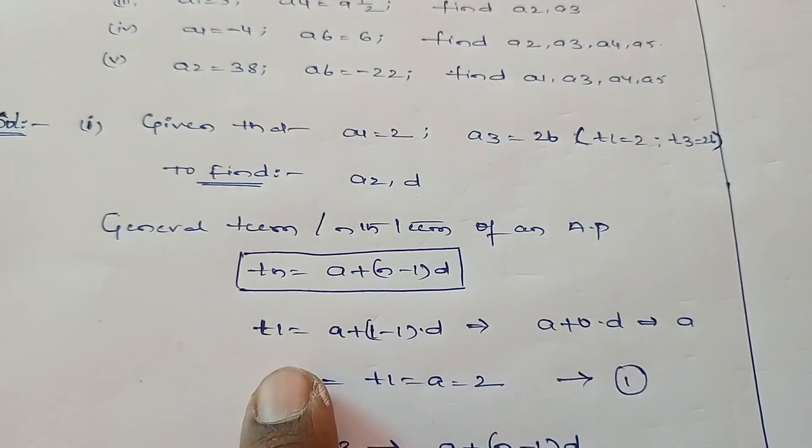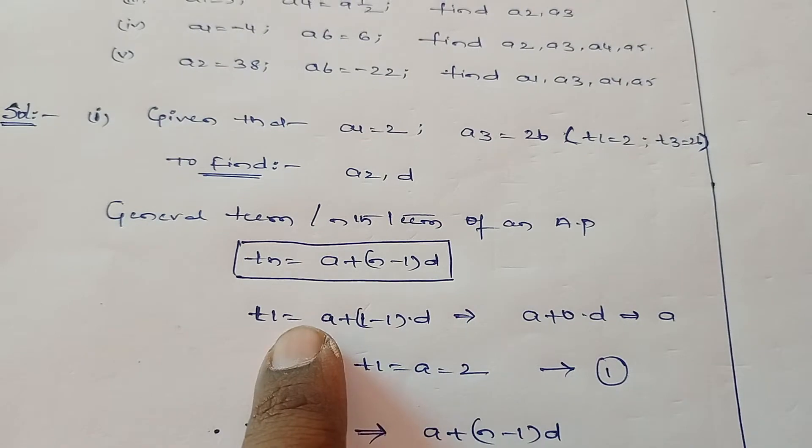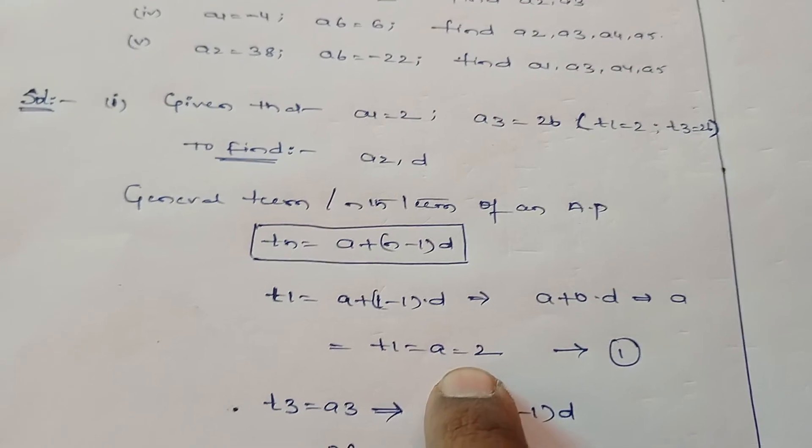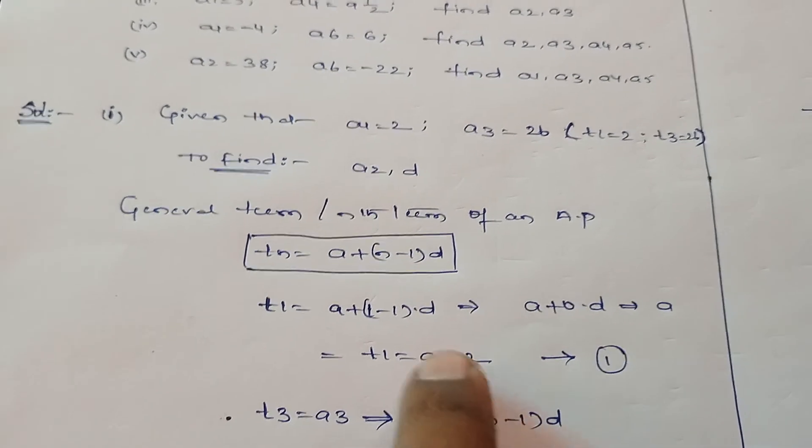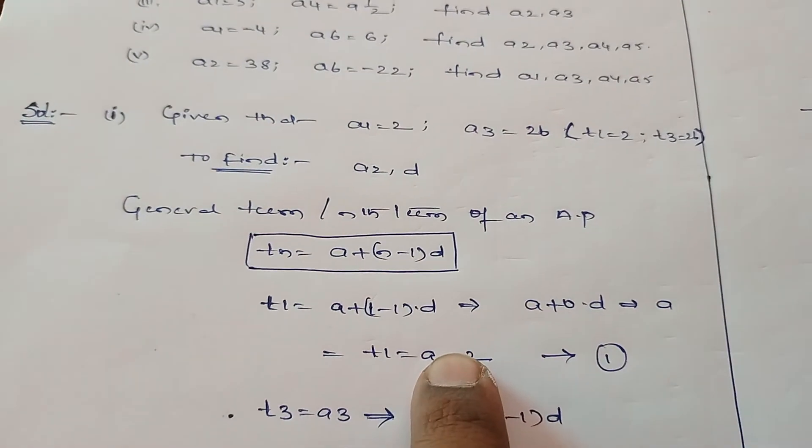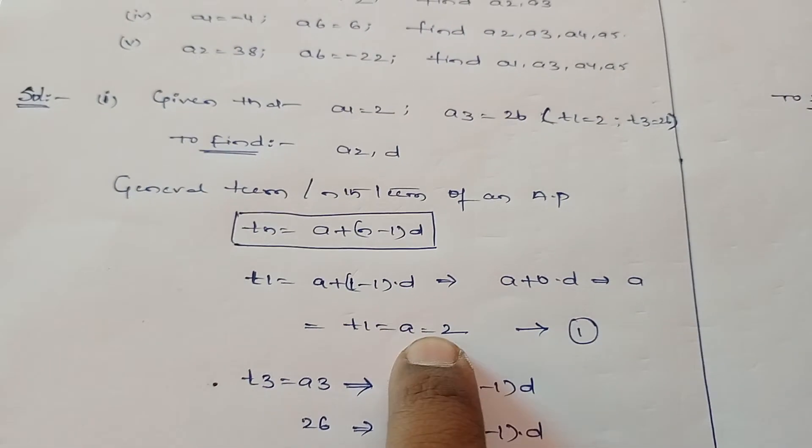Here t1 equals 2. The first term is already given as 2, so no need of doing simplification. If you substitute in the formula also you get the same. First term is given as 2, so keep it as equation 1.